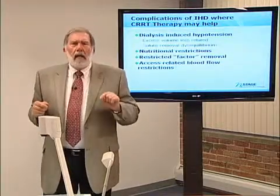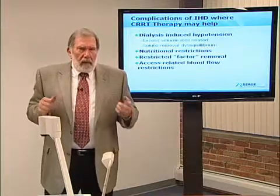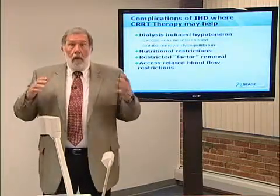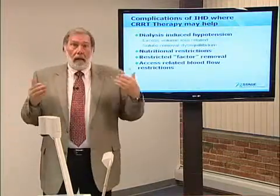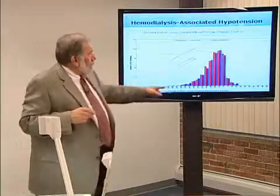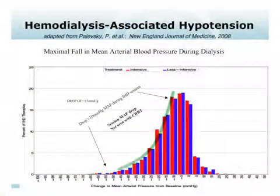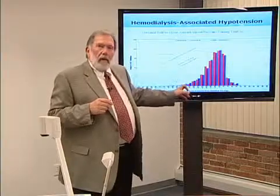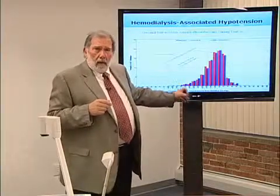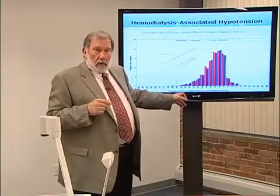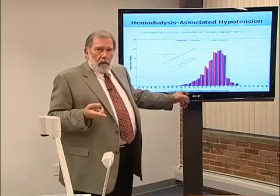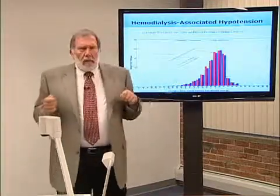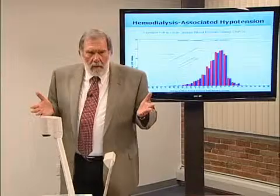If we look at the ATN study, which gave us a good handle on intermittent complications, the mean arterial pressure dropped as high as 35 to 40 millimeters of mercury during a session. This gives us a handle on the frequency and severity of the hypotension induced by intermittent therapy. But is continuous therapy without problems? Not really.